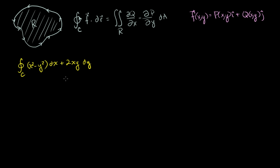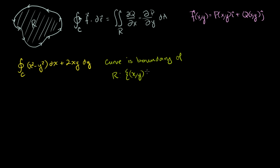Our curve is the boundary of a region. The boundary is defined by all points (x, y) such that x is between 0 and 1, and y is between 2x² and 2x.